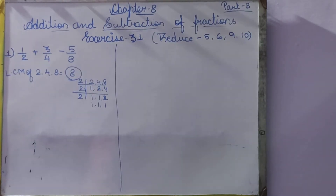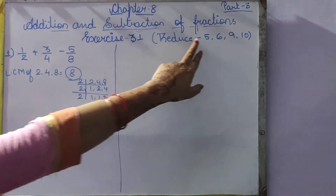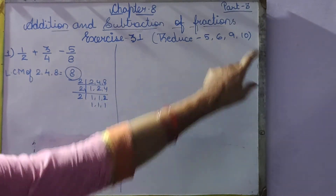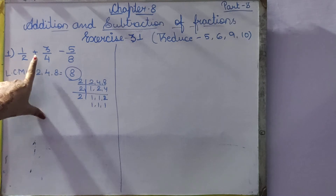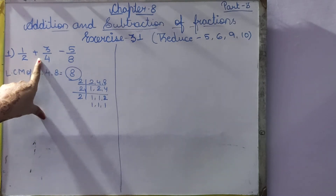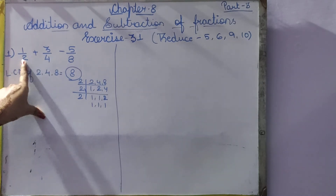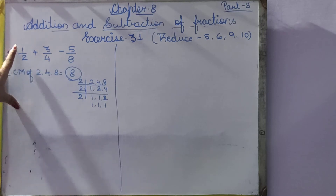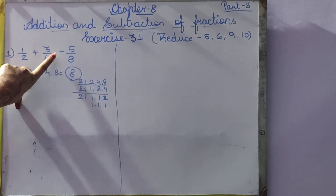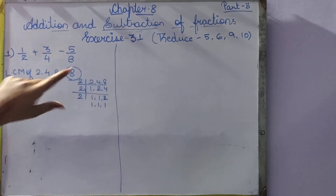Exercise 31. In this there are a total of 12 questions. Questions 5, 6, 9, and 10 we are not going to solve — we have to reduce our numbers. Coming to question number 1: simplify 1 by 2 plus 3 by 4 minus 5 by 8.